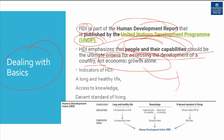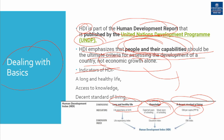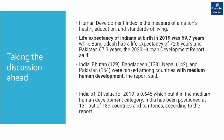Now let's talk about the indicators of the Human Development Index. The human development indicators are long and healthy life, knowledge, and a decent standard of living. By long and healthy life we mean life expectancy at birth. By knowledge we mean expected years of schooling or mean years of schooling, and gross national income per capita in PPP terms.